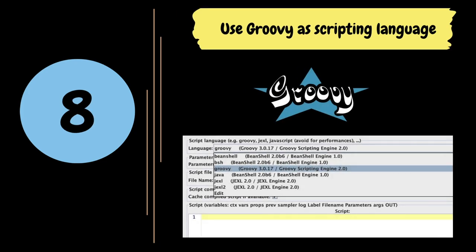If there is a need for custom logic in the script, the recommended approach is to utilize the JSR223 elements and opt for Groovy as the scripting language. Groovy is a great dynamic scripting language that is well-maintained, offers support for a compilable interface and outperforms virtually all other languages in JMeter, primarily BeanShell. For enhanced performance, it is advisable to enable the cache compilation option in the JSR223 element, as this can substantially improve overall performance.